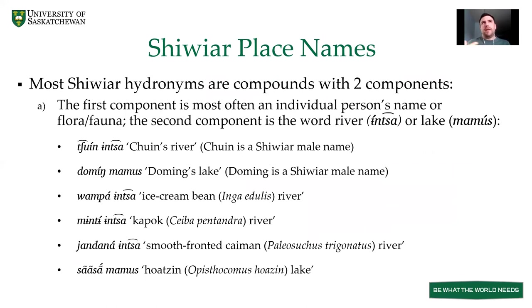Very clear patterns emerged about how Chibiad people name places, rivers, and lakes. Most Chibiad hydronyms are compounds with two components: the first component is most often an individual person's name or flora and fauna, and the second component is the word for river or lake — Inza or Mamuz in Chibiad. Examples include Chuininza meaning 'Chuin's river,' Doming Mamuz meaning 'Doming's lake,' Wambainza meaning 'river of the ice cream bean,' Mendenza meaning 'river of Kapok,' Yandanainza meaning 'river of the smooth-fronted caiman,' and Sanzamamuz meaning 'lake of the Watsin bird.' The pattern of compound formation is clearly visible.